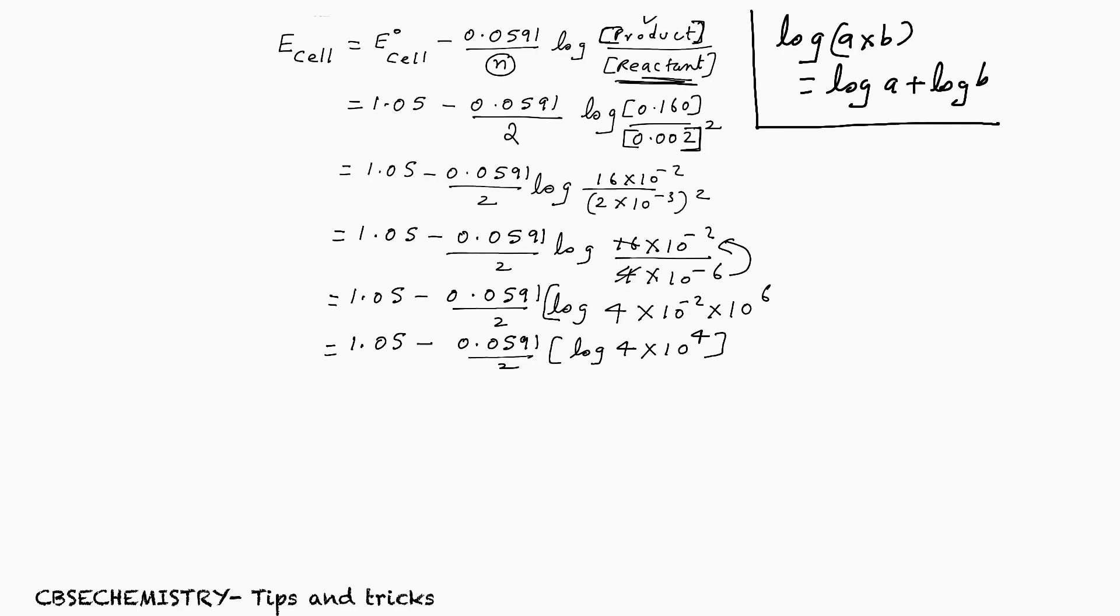Hope all of you understand. Now, you have to apply this rule: log A × B is equal to log A plus log B. Here, 4 is A and B is 10^4. So, 1.05 minus 0.0591 by 2, log A plus log B, log 10^4.